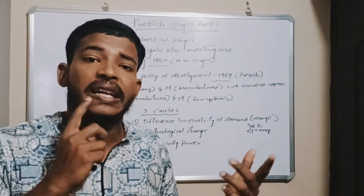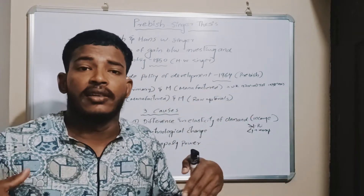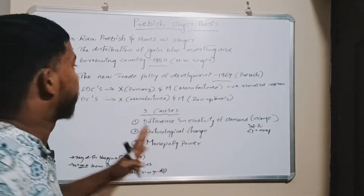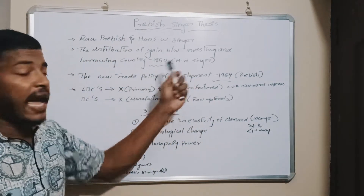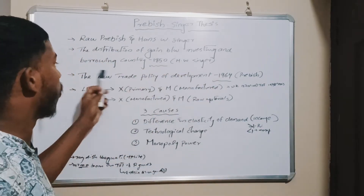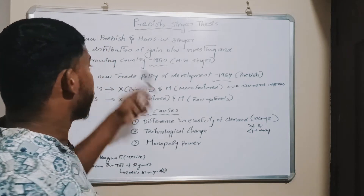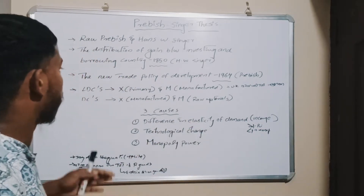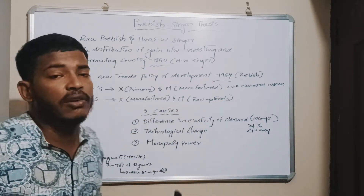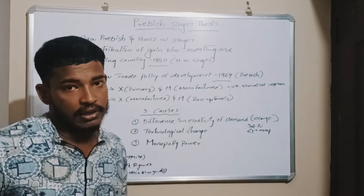The second one is a UK-based economist. Let's discuss the two workers. The first one is Hans W. Singer — 'The Distribution of Gains Between Investing and Borrowing Countries.' The second is Prebisch — 'New Trade Policy for Development,' in the year 1964.